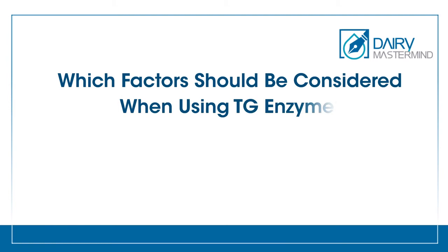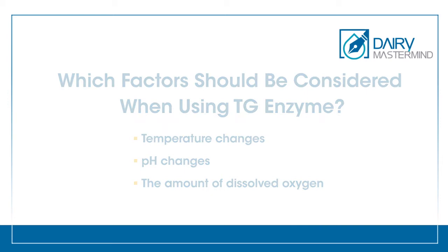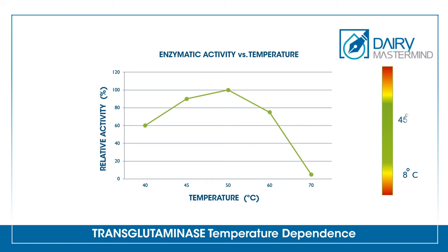Which factors should be considered when using TG enzyme? Some factors like temperature, pH and the amount of dissolved oxygen should be considered. Regarding temperature: below +2°C, transglutaminase is inactivated. The optimum temperature for maximum activity is about 50°C. Above 65°C, transglutaminase is irreversibly inactivated.